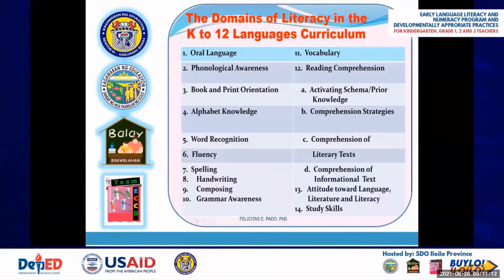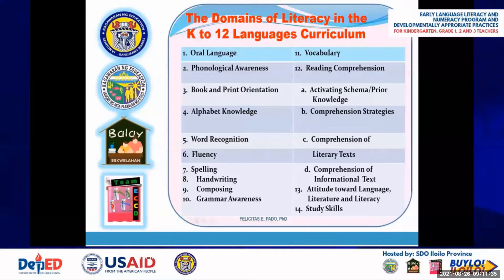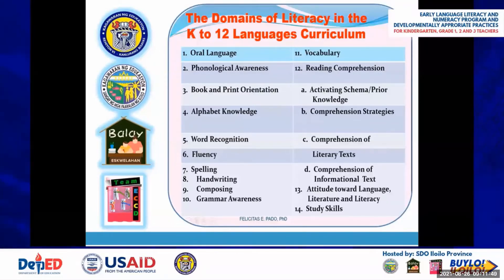The 14 domains are: oral language, phonological awareness, book and print orientation, alphabet knowledge, word recognition, fluency, spelling, handwriting, composing, grammar awareness, vocabulary, reading comprehension — which includes activating schema or prior knowledge, comprehension strategies, comprehension of literary texts, and comprehension of informational text — attitude toward language, literature, and literacy, and study skills.